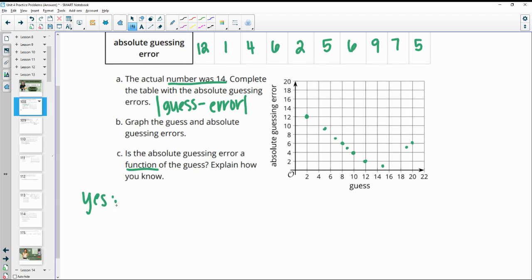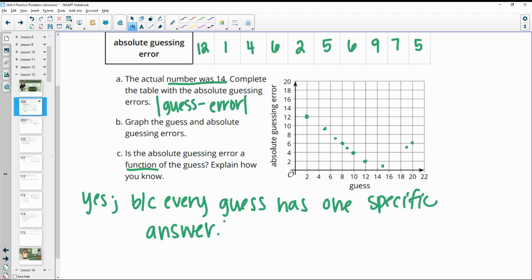Is the absolute guessing error a function? Explain how you know. And yes, because every guess has one specific error or one specific distance it is from 14. So if you tell somebody's guess, they can tell you exactly how far away it is from 14. There aren't multiple answers to that, so this is a function.